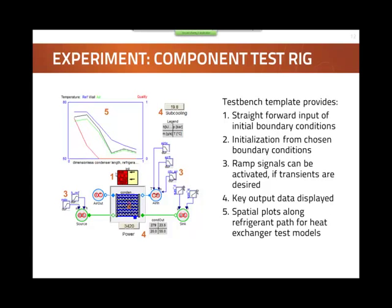Briefly, what such a template contains: you have a model where you enter all the data for the experiment like boundary conditions, and you can exchange the pre-parameterized component. The default is always that the model runs in steady state, but you can add transients if interested. There are also a few visualizers showing important system variables like the subcooling or the state of the refrigerant out of the component, and a visualizer that displays temperatures graphically.